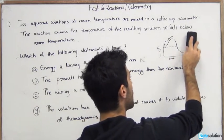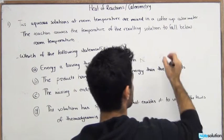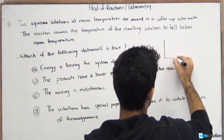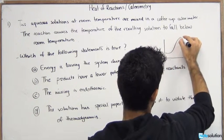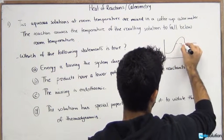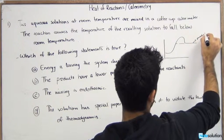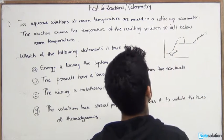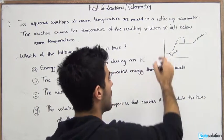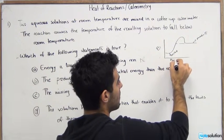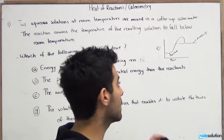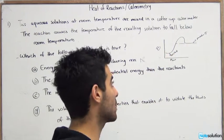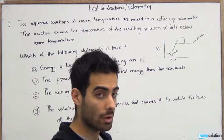This is the product. This is the reactants. So you could see here that again, this is potential energy and this is time. And you could see here in this case, in the case of endothermic, the products will have a higher potential energy compared to the reactants. And this is because the reaction itself requires energy.